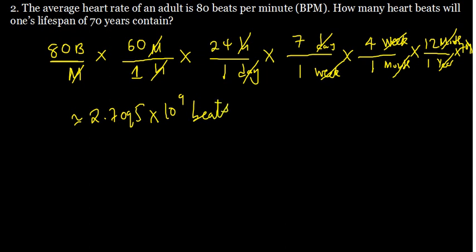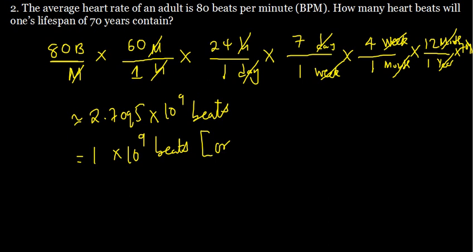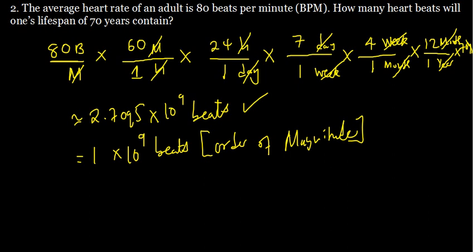This gives us something like 2.7095 multiplied by 10 to the power 9 beats. If we want to express this in order of magnitude, since 2.7 is a number below 5, we can round it off to 1 and then multiply by 10 to the power 9 beats. This is expressing it in order of magnitude — that's the range of how big the number is. This number is a billion, so it is in a range of a billion beats.